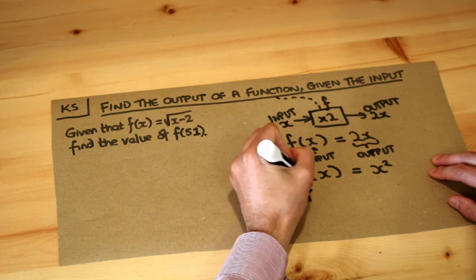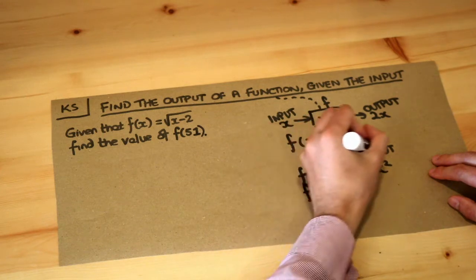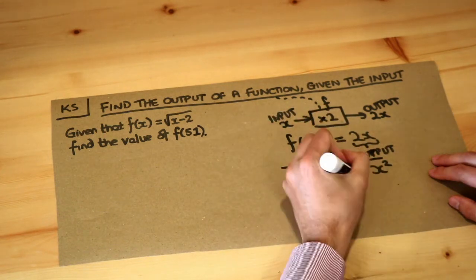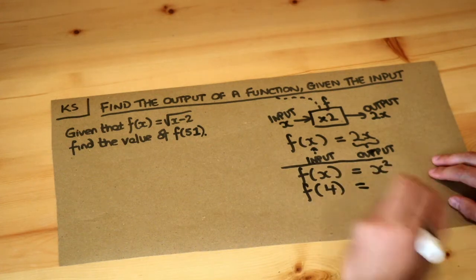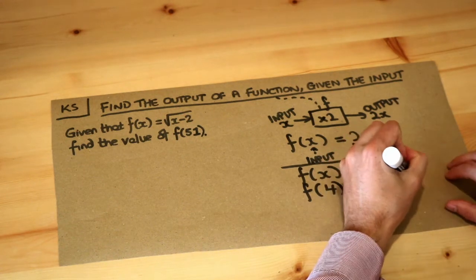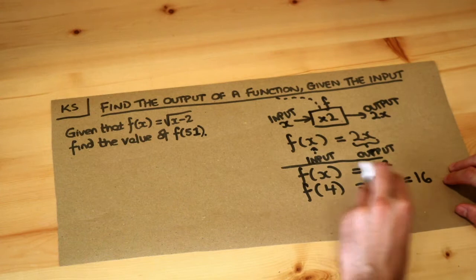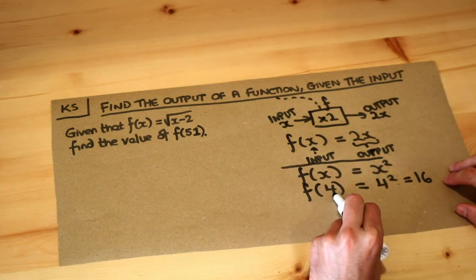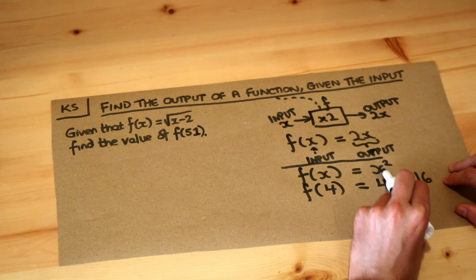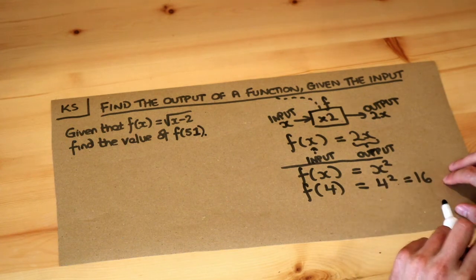And if I wrote, say, f(4) for this particular function here, then I would do 4², which equals 16. So if you have a function like this, then whatever x is being substituted with, you substitute the x on the right-hand side with the same thing.